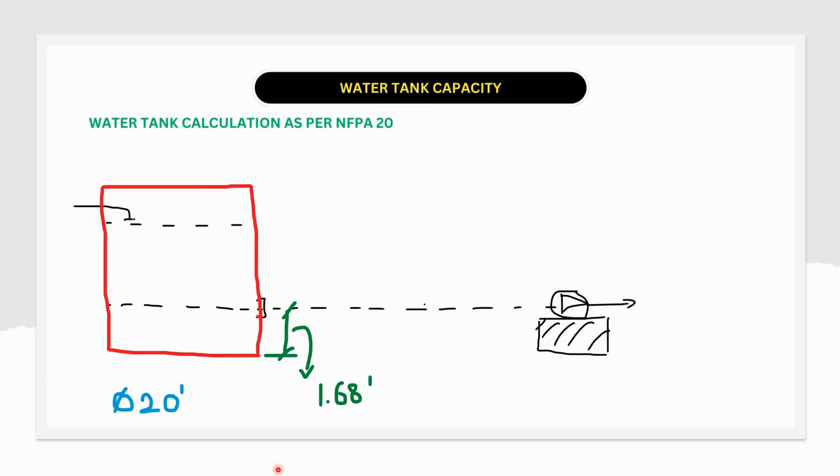Let us try to calculate the water tank capacity as per NFPA 20 requirements. For example, our system demand is 1000 GPM for 30 minute duration. Then the capacity would be 30,000 gallons. But based on these 30,000 gallons, we cannot decide the water tank size because there are few things to be considered before we select the water tank size. I will explain you in detail.